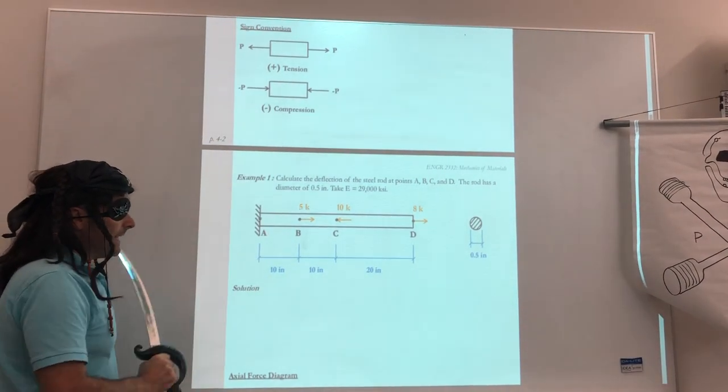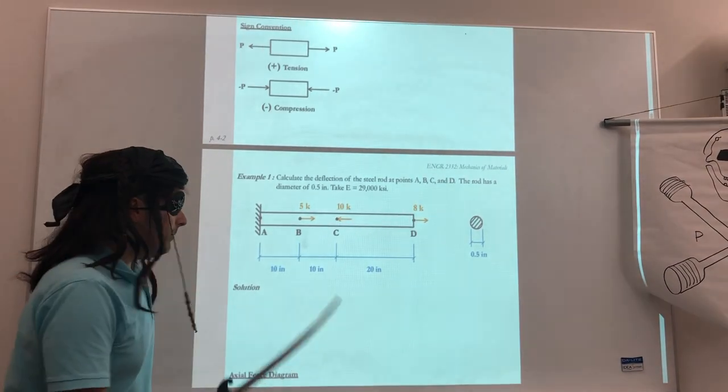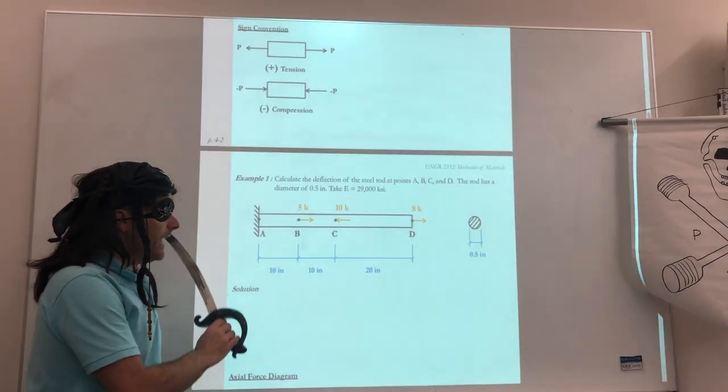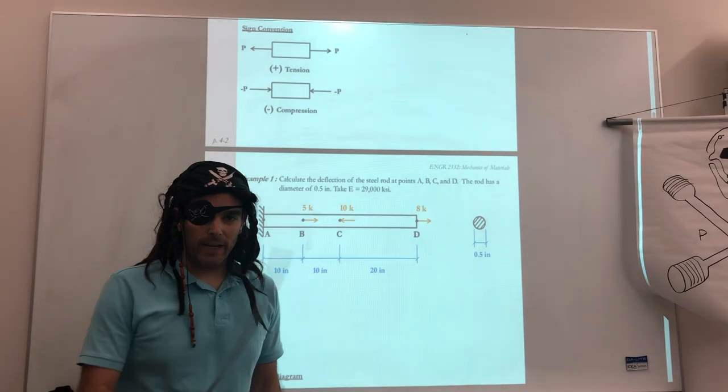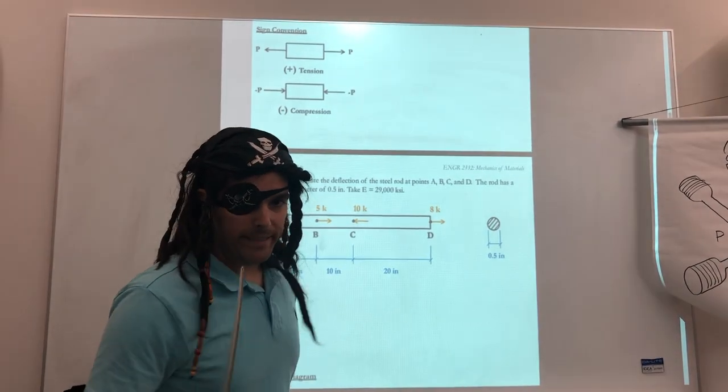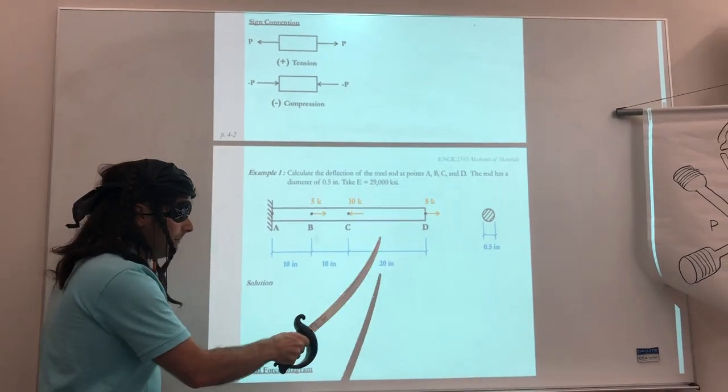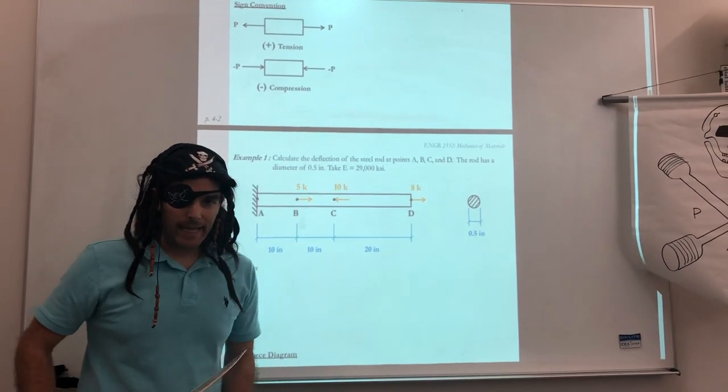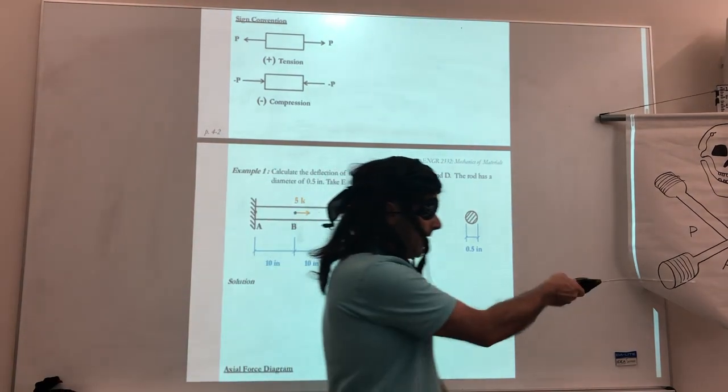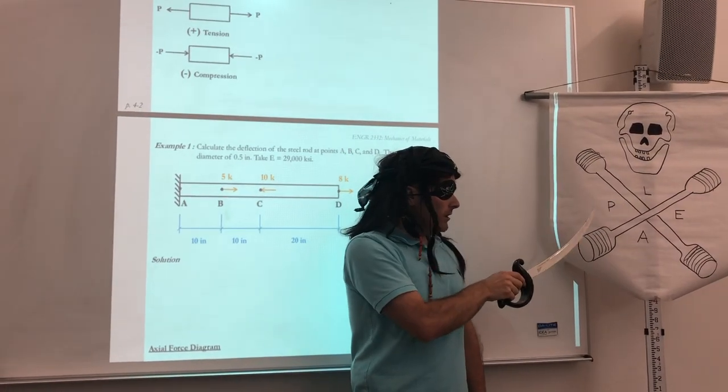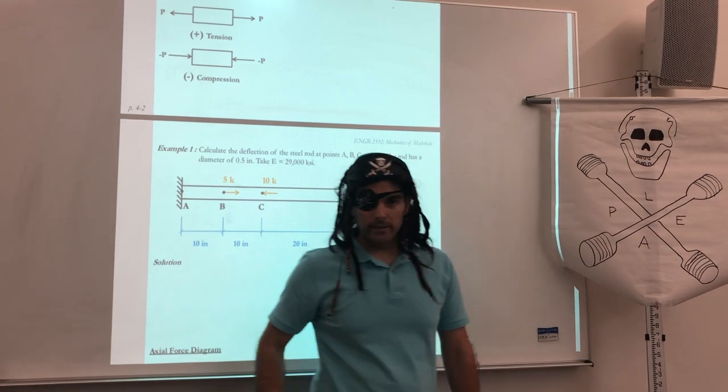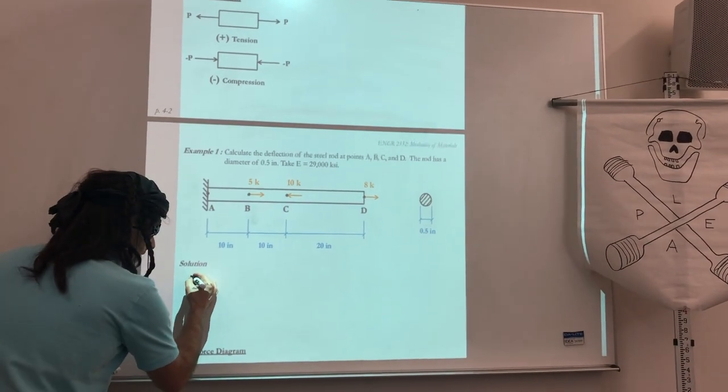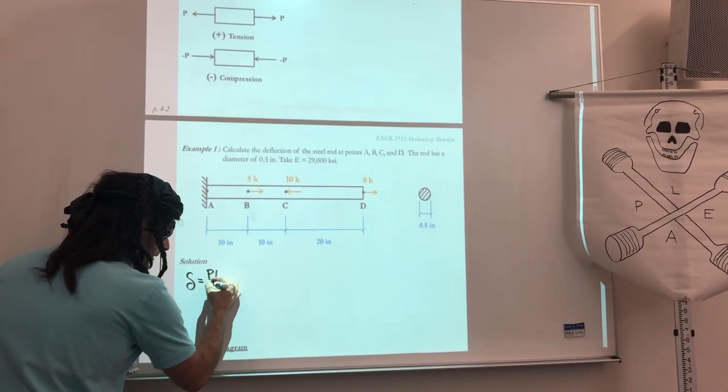The problem asks us to calculate the deflection of the steel rod at points A, B, C, and D. The rod has a diameter of 0.5 inches, and we're told to take the modulus of elasticity to be 29,000 KSI, so it's probably steel. We have some loads applied, we have the cross-section, we have some lengths, dimensions, the diameter. Now we need to get solving this. So, we know our motto, Hook's Law is PL over EA. So we always remember our formula, and that's what we wish to solve.